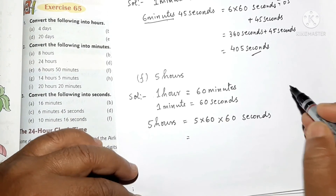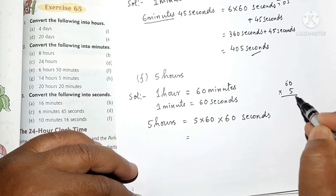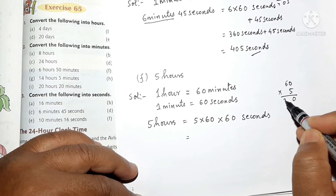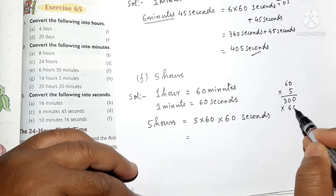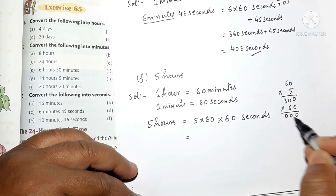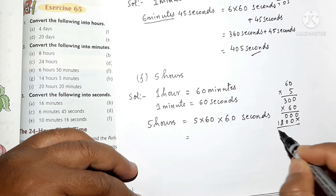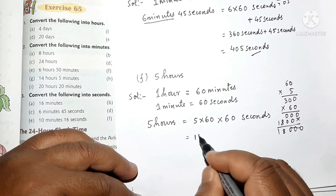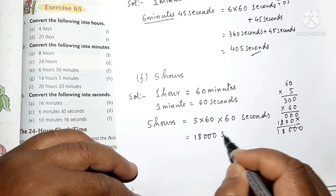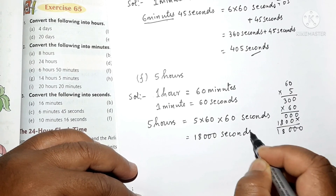5 multiplied by 60 equals 300. Again, multiply by 60: 6 into 3 is 18. So the answer is 18,000 seconds.